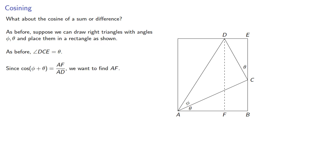Since the cosine of phi plus theta is the ratio AF to AD, we want to find AF.